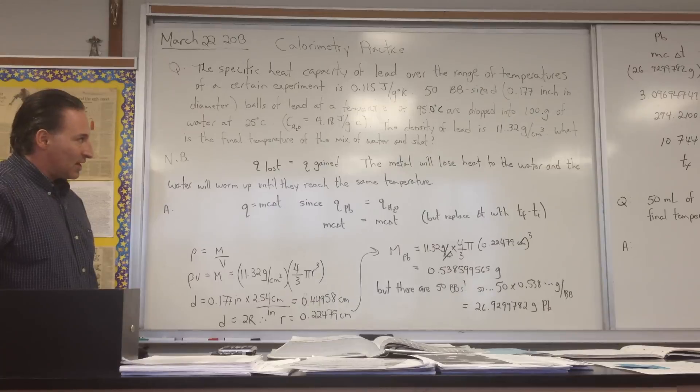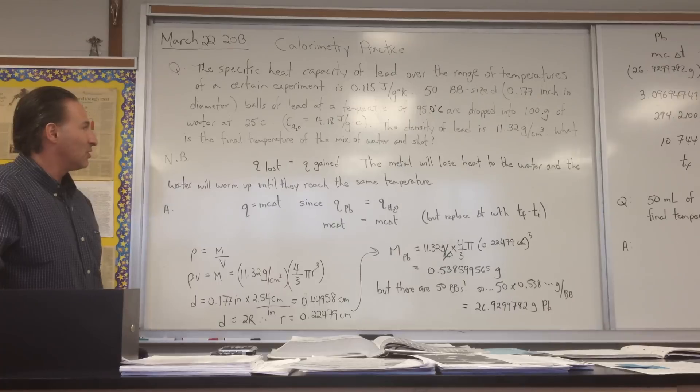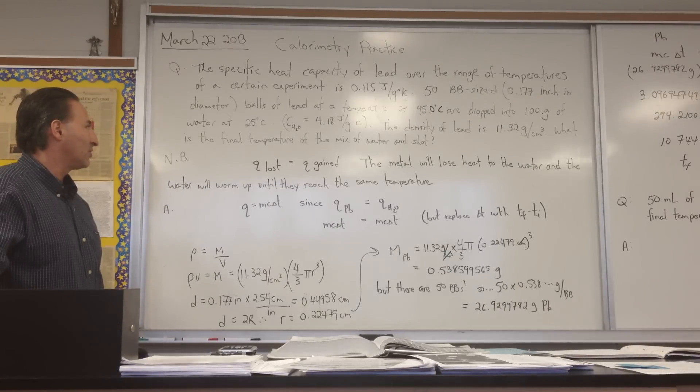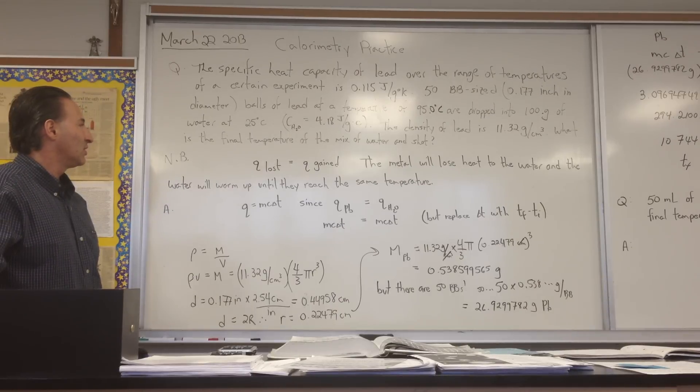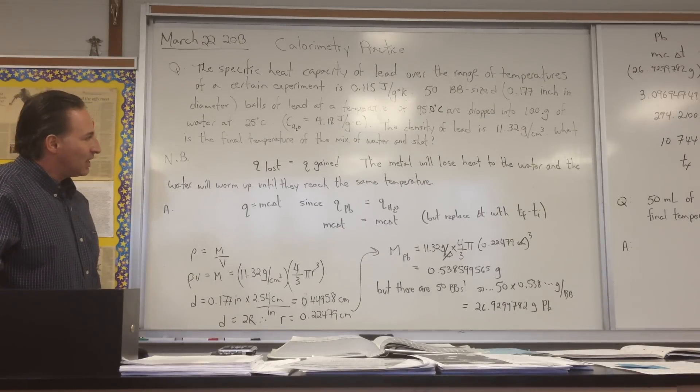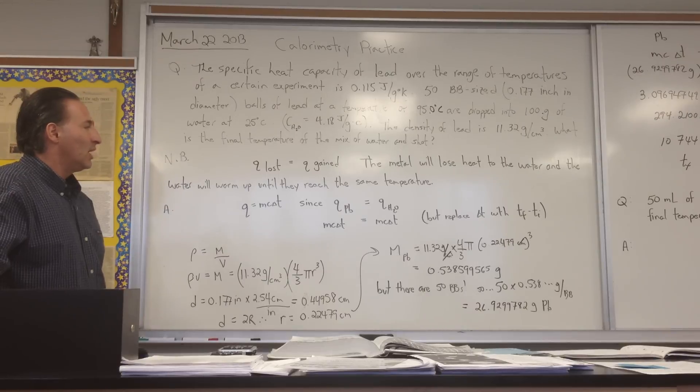50 BB sized balls of lead at a temperature of 95 degrees are dropped into 100 grams of water at 25 degrees Celsius. So BB size means it's 0.177 of an inch in diameter. The density of lead is 11.32 grams per centimeter cubed. What is the final temperature of the mix of water and shot?